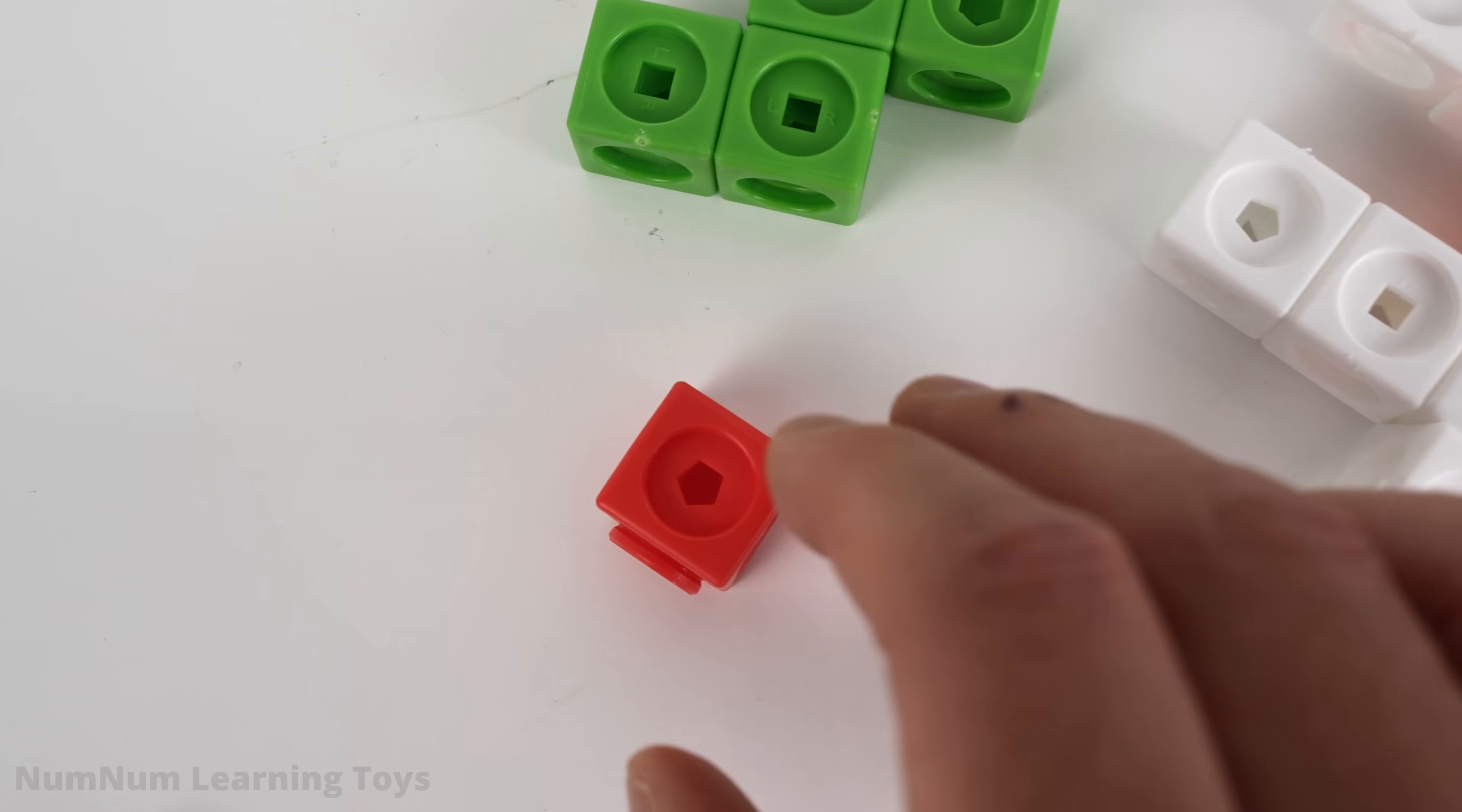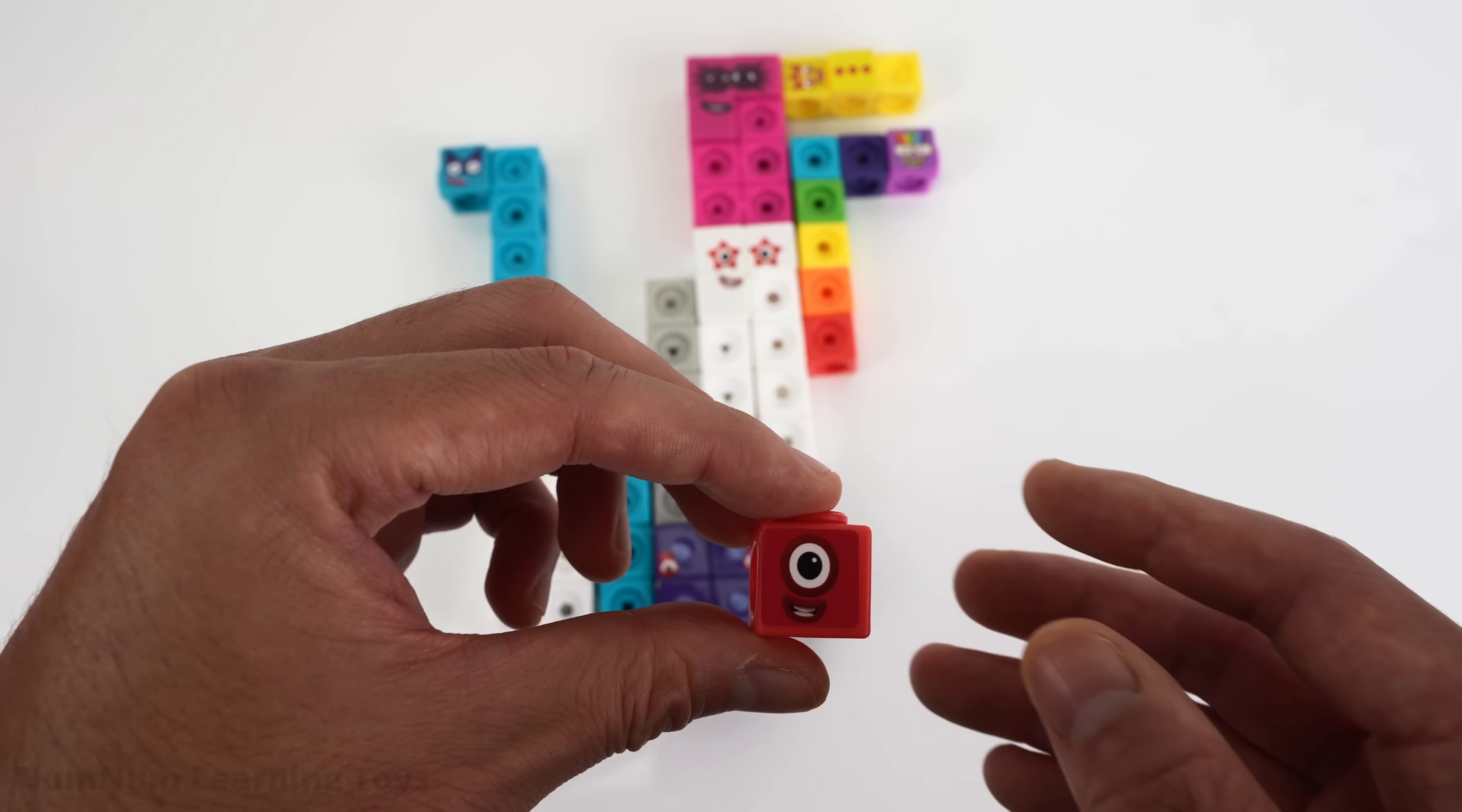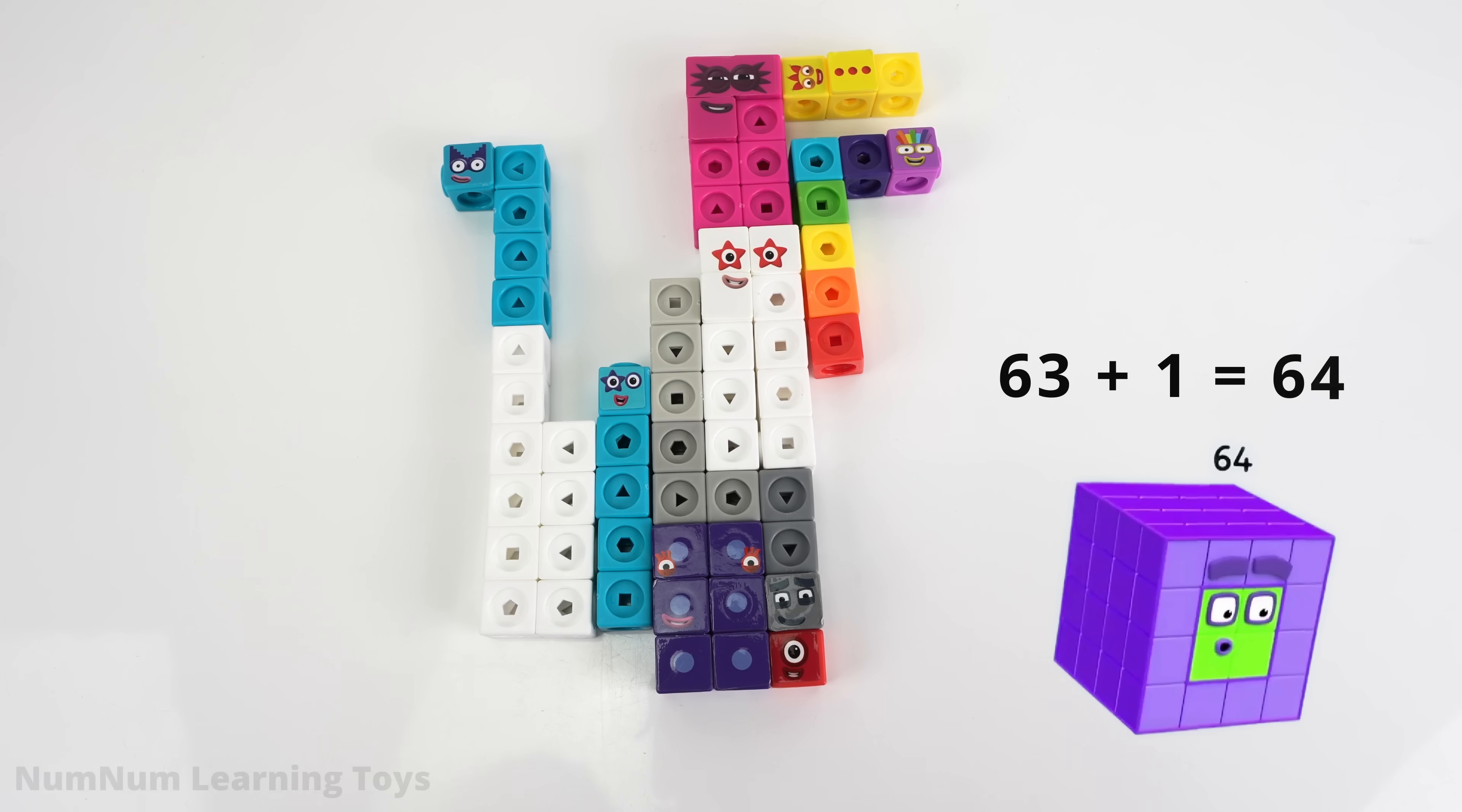I'm searching for the first cube! It's number 1! 1 is 1 unit tall, 1 unit wide, and 1 unit deep. We're going to place it at the bottom right here. 63 plus 1 equals 64! A 4 by 4 by 4 cube!